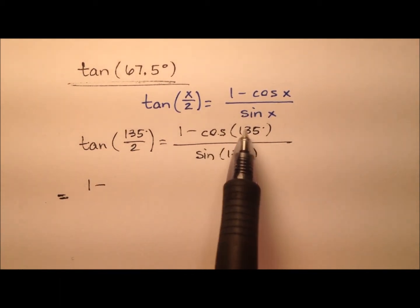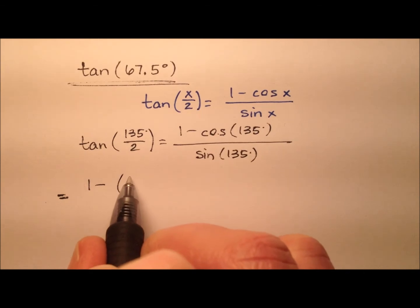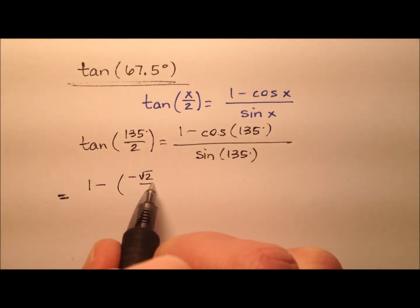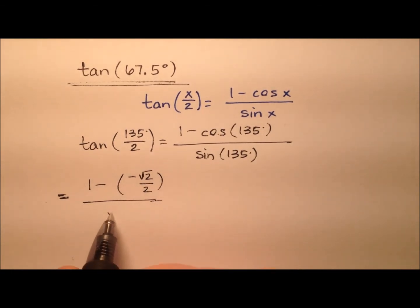1 minus, and then the cosine of 135 degrees is negative square root of 2 over 2. And the sine of 135 degrees is positive square root of 2 over 2.